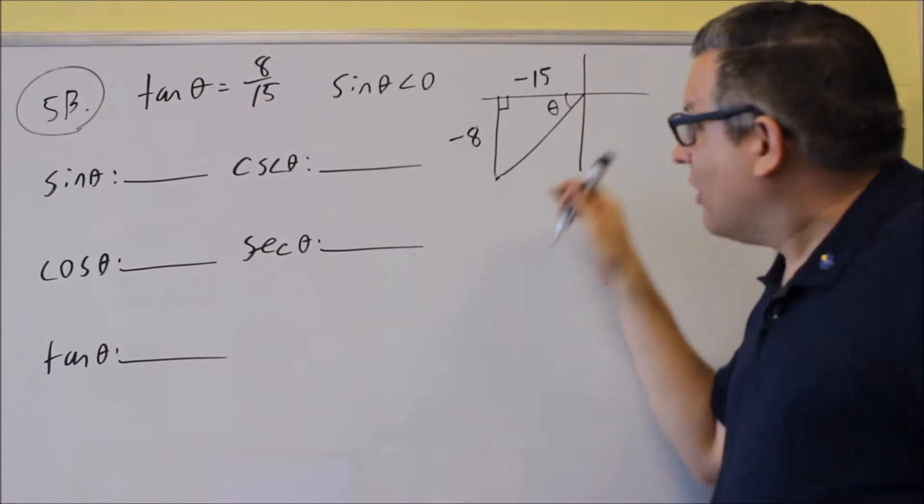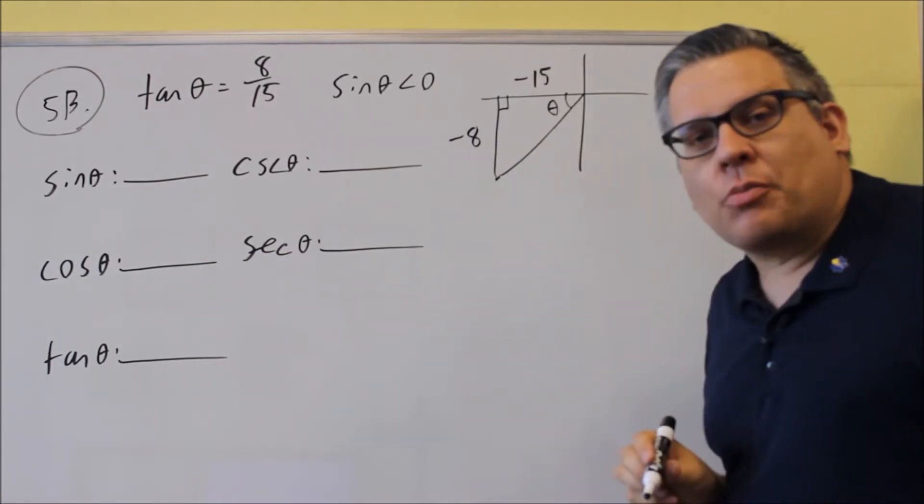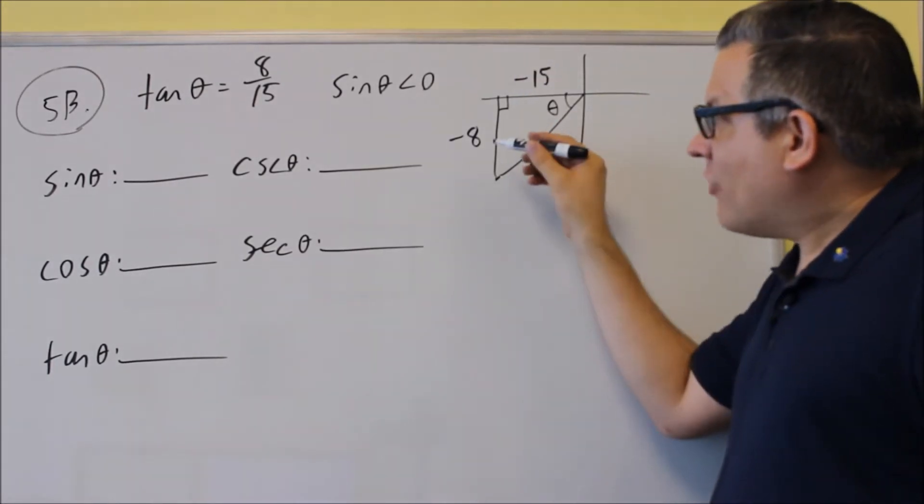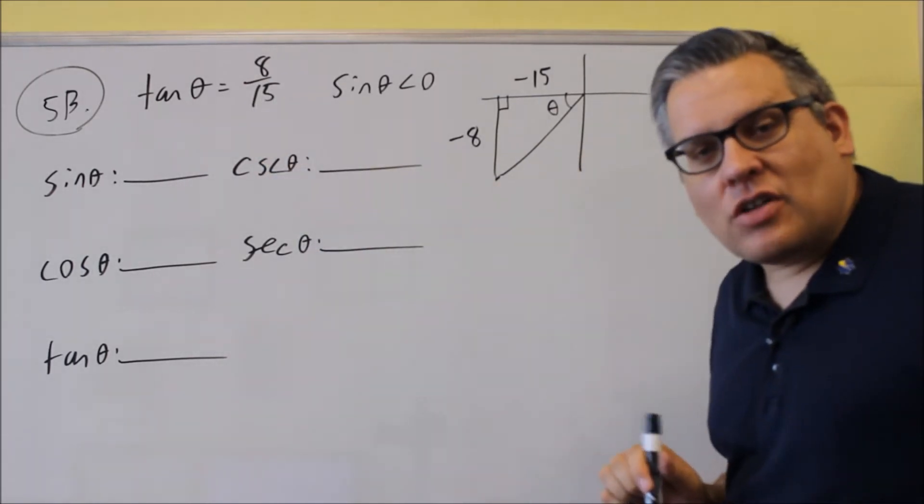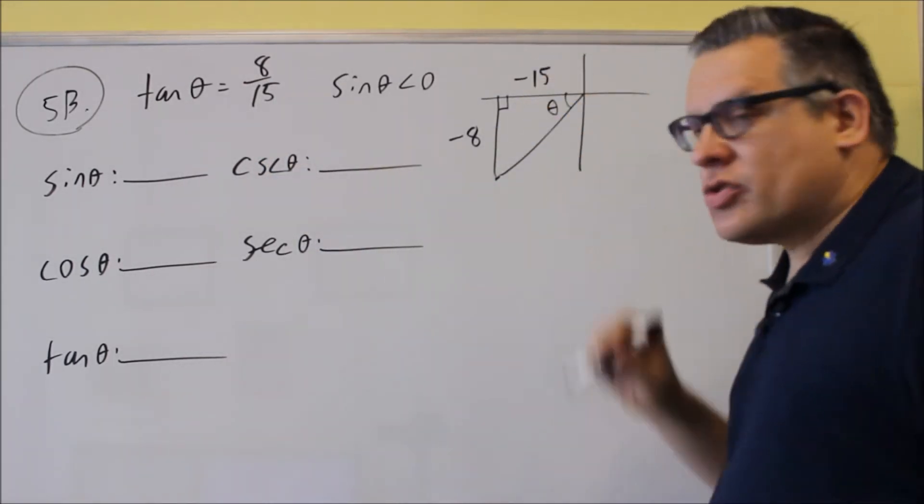If you're in the third quadrant, the x and the y coordinates are both negative. Negative 8 over negative 15 would still give you positive 8/15. So it's still going to be correct. We just have to put those negatives there.